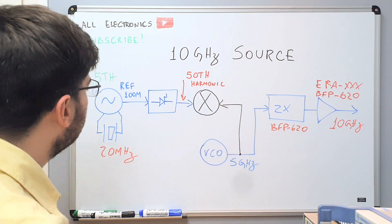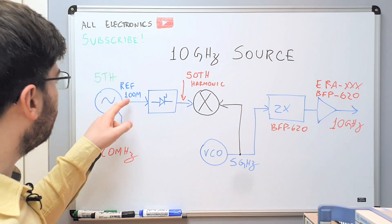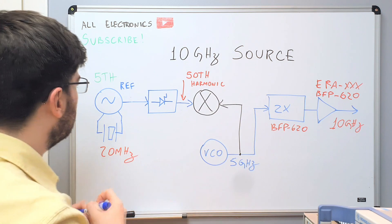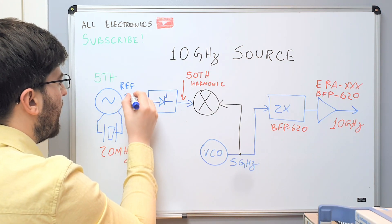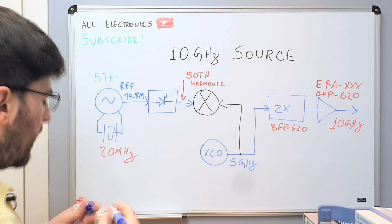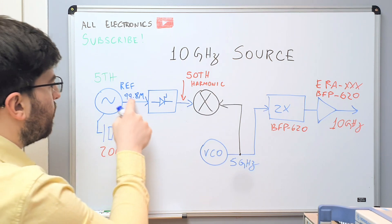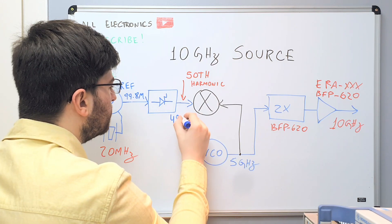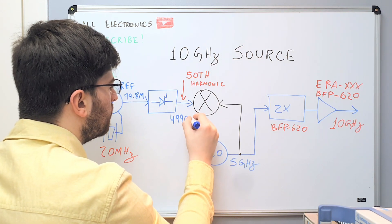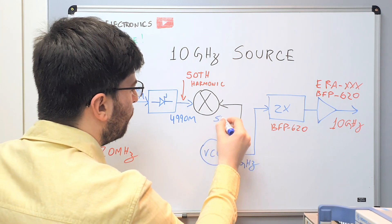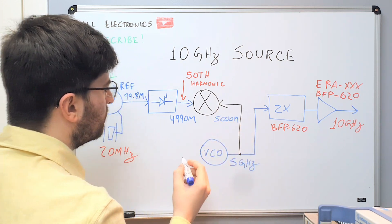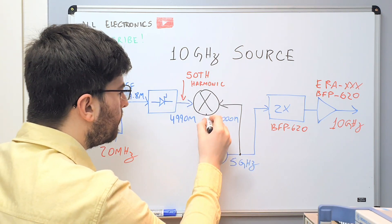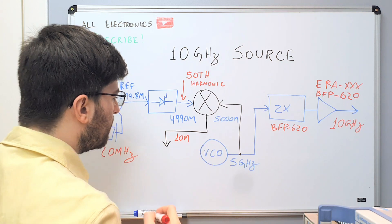What is interesting is that actually this frequency here needs to be tuned. So this crystal needs to be tuned to 99.8 MHz. So 99.8 times 5, the 5th harmonic, will be 4,990 MHz, and here we have 5,000 MHz. So now we downconverted the signal of the VCO to a 10 MHz signal.